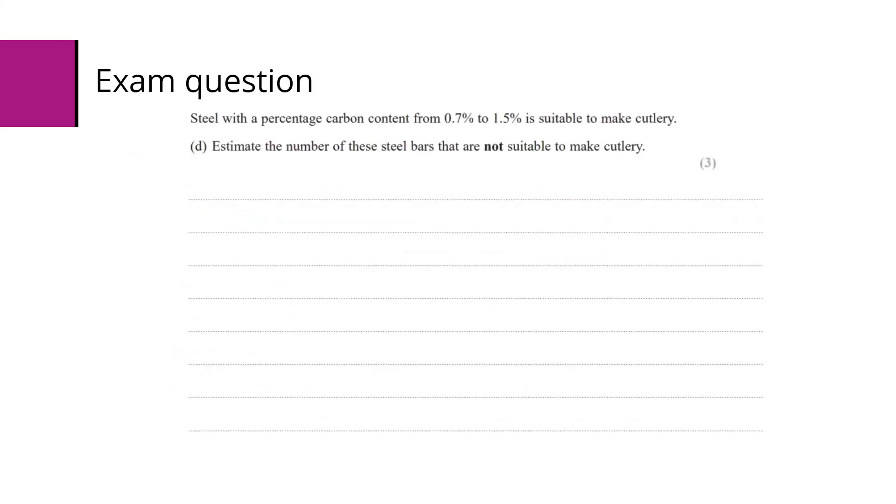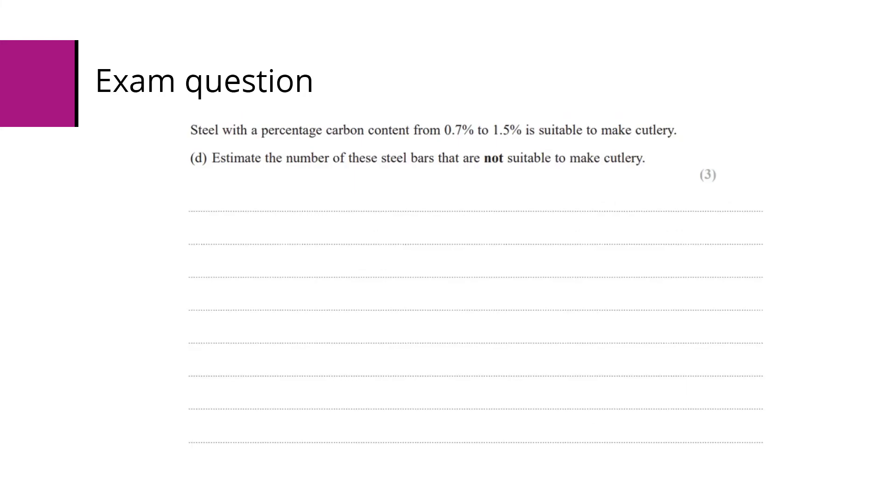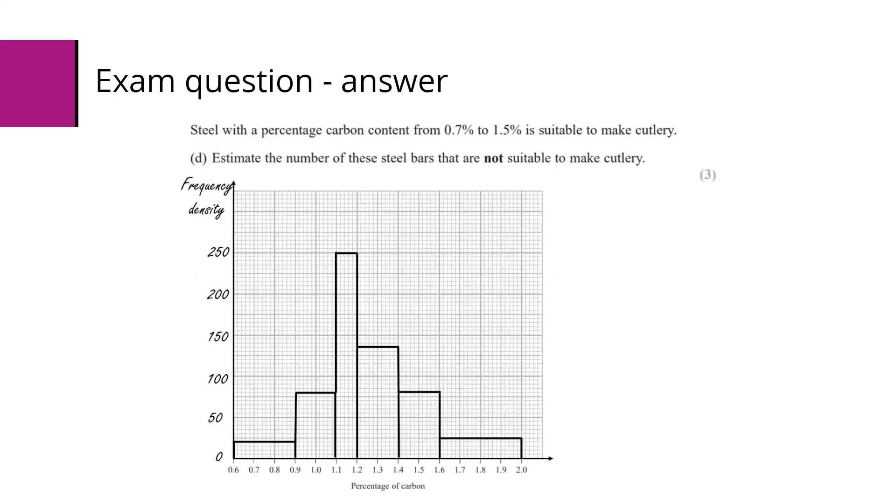In this section we're asked: the steel with a percentage carbon content from 0.7% to 1.5% is suitable to make cutlery. Estimate the number of these steel bars that are not suitable to make cutlery, so estimate how many steel bars are outside of that given range there. Using the histogram to help with this, 0.7% is there on the diagram, and the section to the left of that is outside what we're wanting. 1.5% on the right hand side there, and that section there shaded in is the part that we're interested in, so any cutlery with a carbon percentage content in the shaded sections are ones that we don't want.